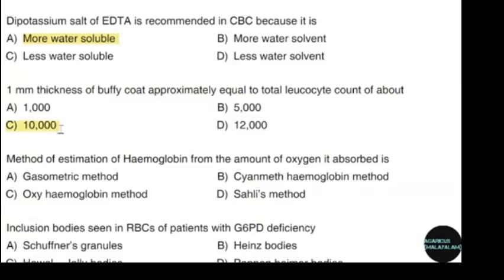Method of estimation of hemoglobin from the amount of oxygen it absorbs. Correct answer: option A — Gasometric method.